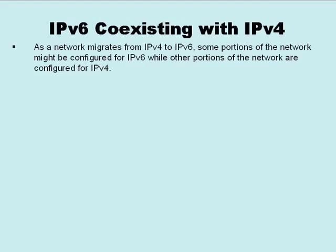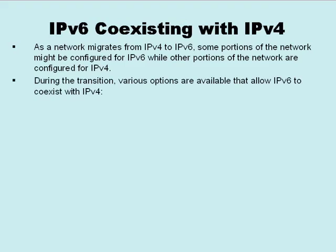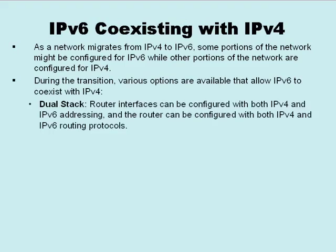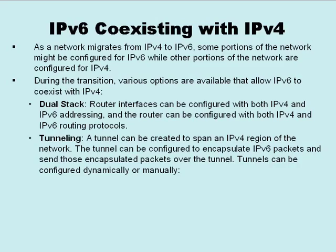There are a few different options available during this transition. One option is the dual stack option, where router interfaces can be configured with both IPv4 and IPv6 addressing, in addition to IPv4 and IPv6 routing protocols. Another approach is tunneling, where we can create a virtual connection called a tunnel that spans the IPv4 region of the network.